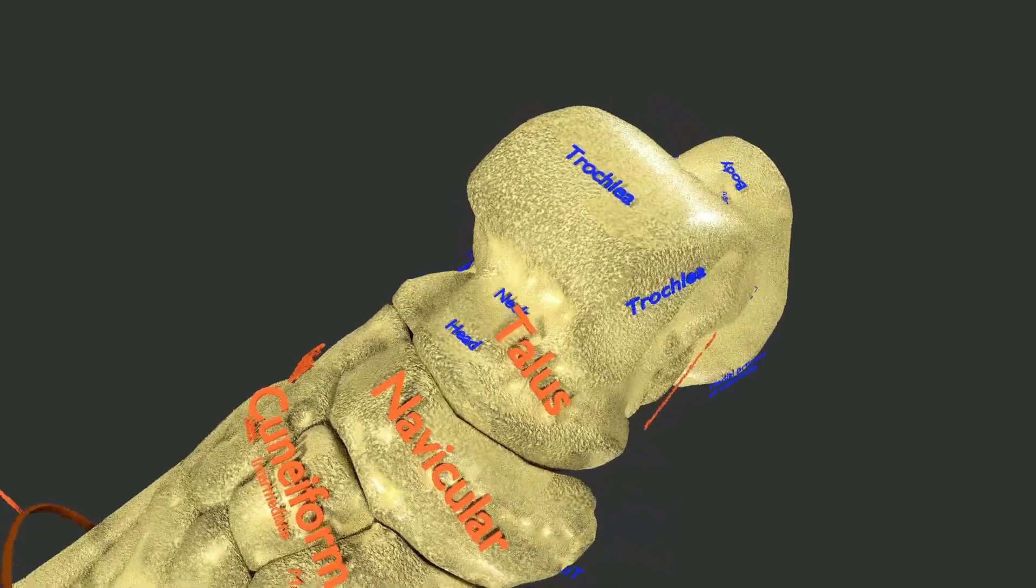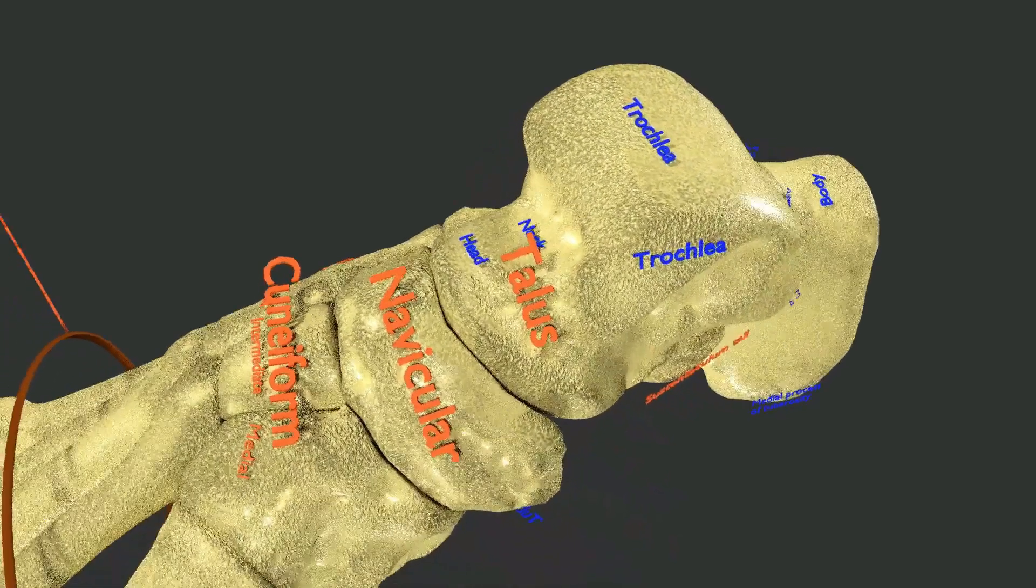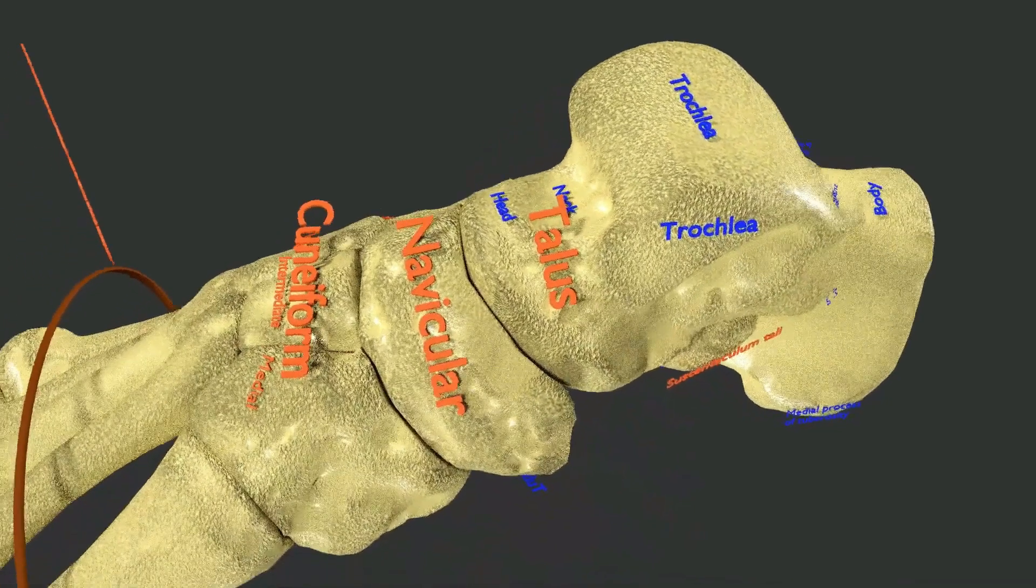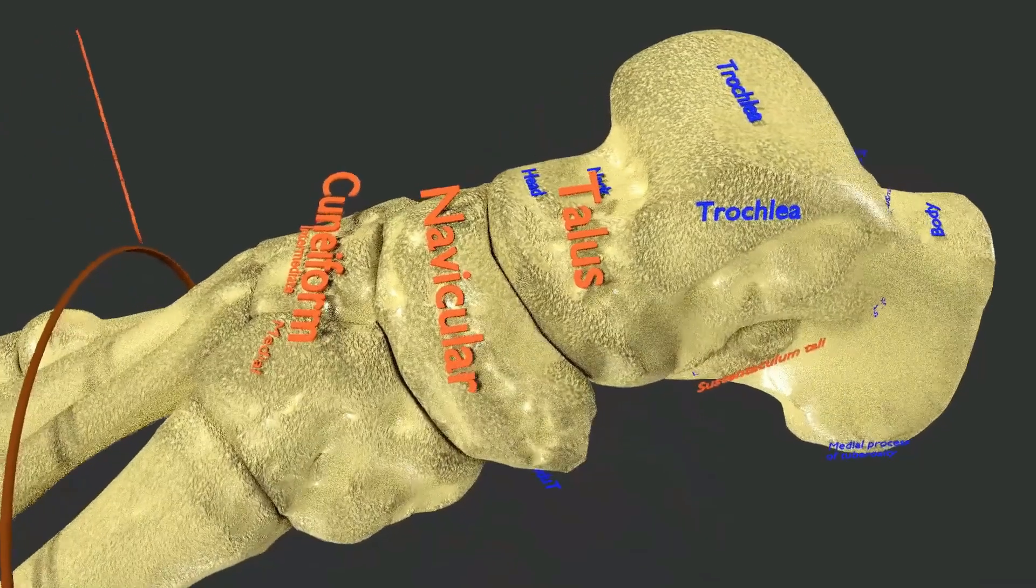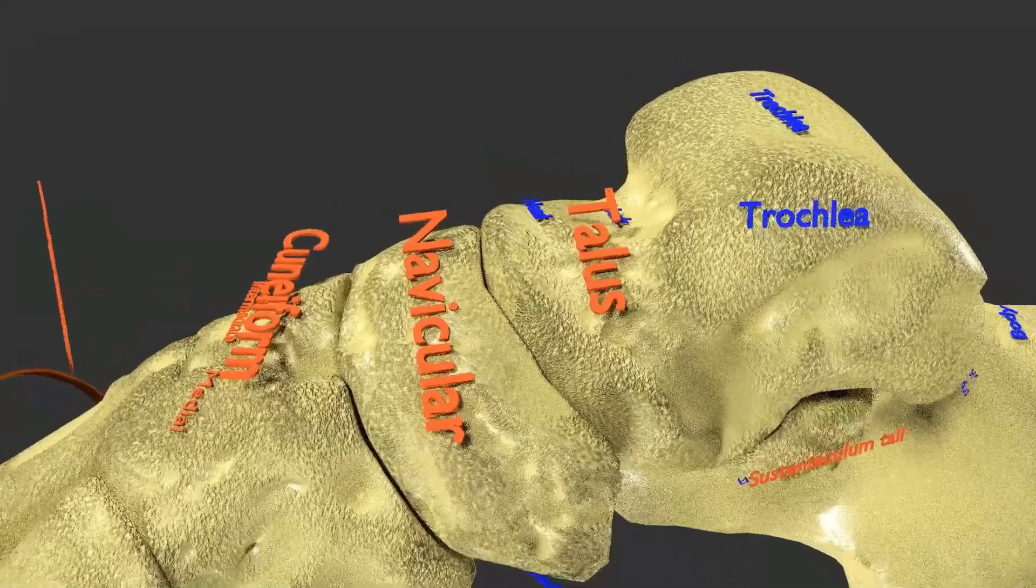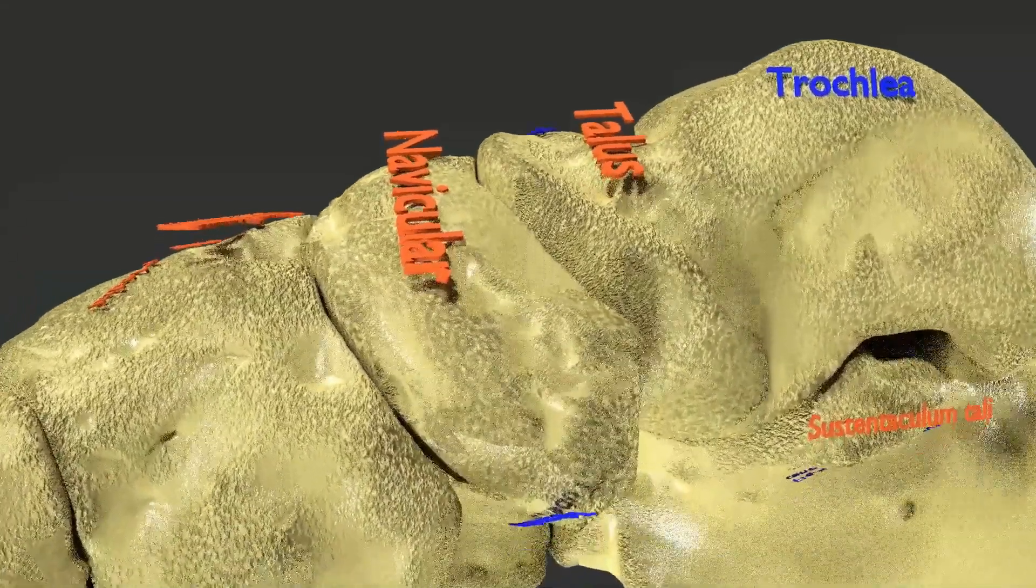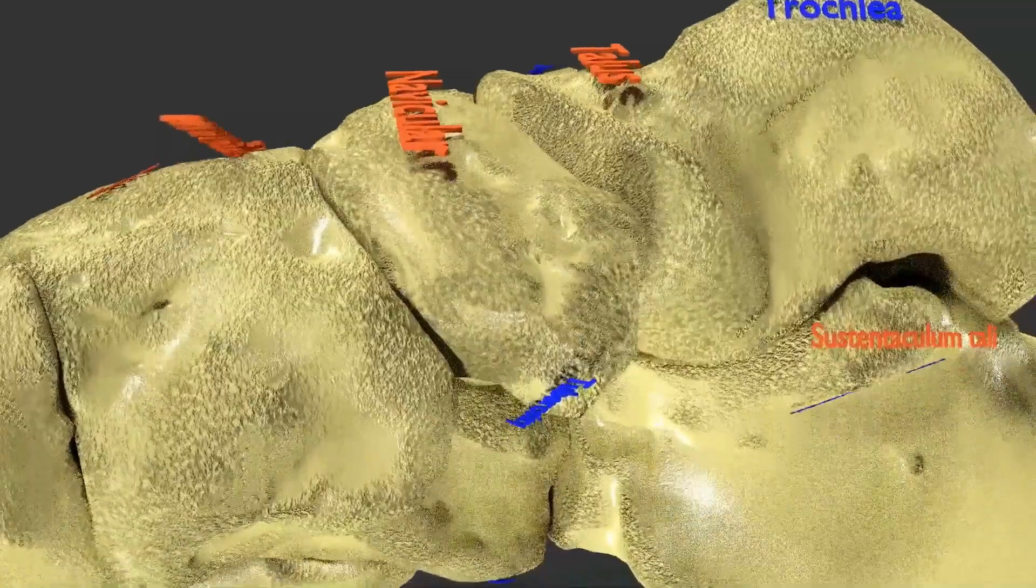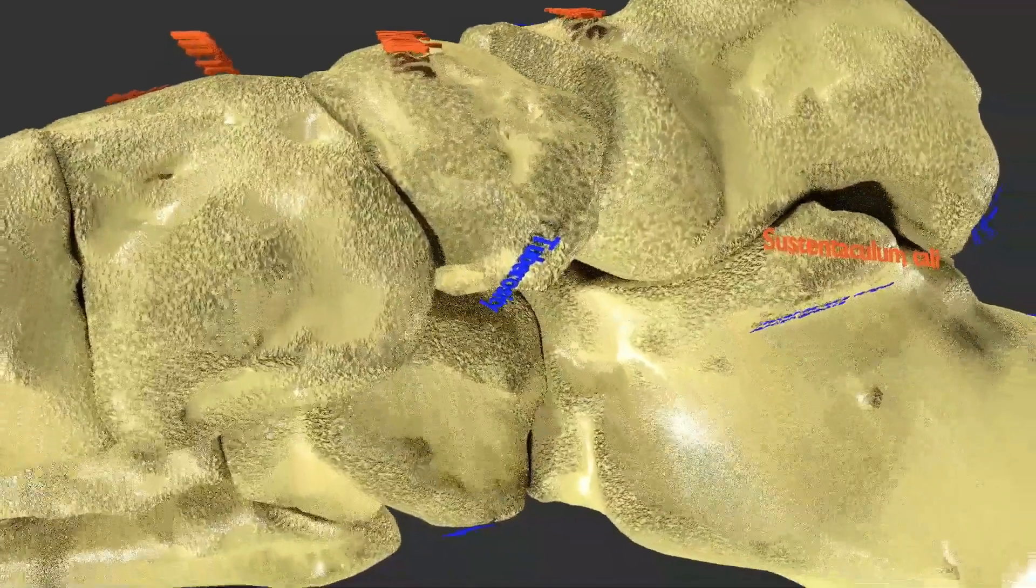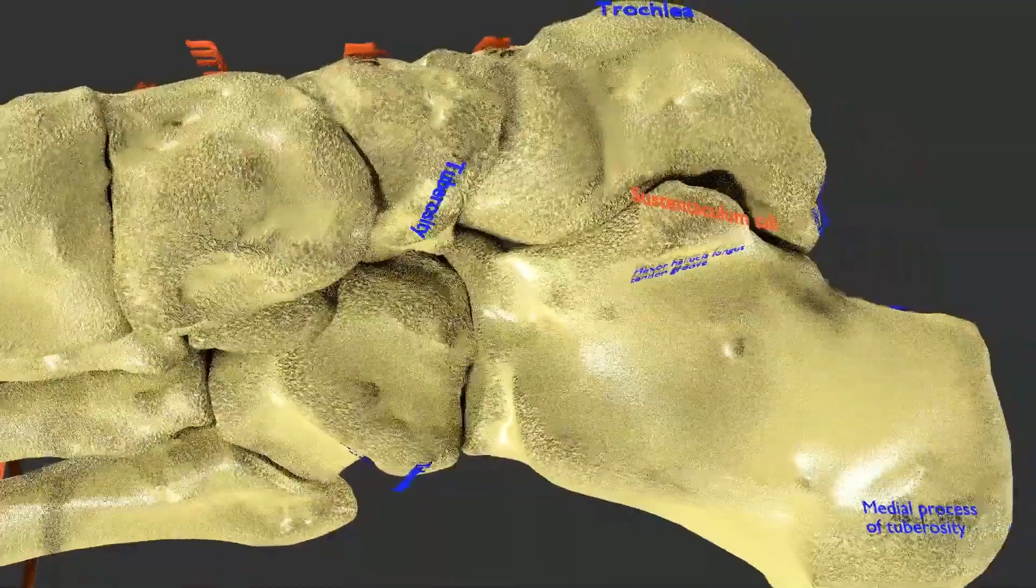The parts of talus visible now are the trochlea, the neck, and the head. Moving inferomedially you see the medial and dorsum of tarsal bones. The tuberosity of the navicular is seen, so is the calcaneum bone with its sustentaculum tali.